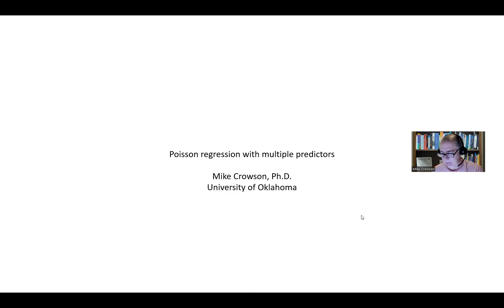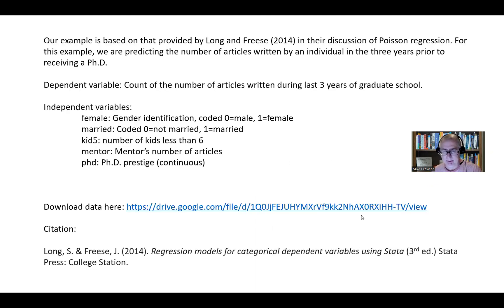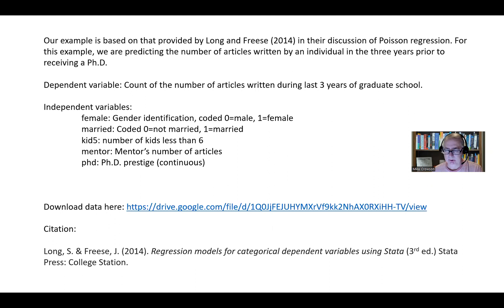The example we're going to be working from is based off of that provided by Long and Freese 2014 in their book, Regression Models for Categorical Dependent Variables Using Stata. In their discussion of Poisson regression, they provide an example where the researcher is trying to predict the number of articles written by an individual in the three years prior to receiving their PhD.